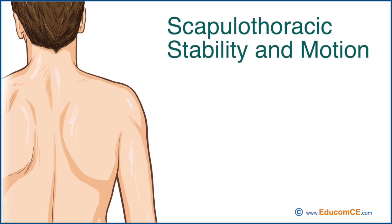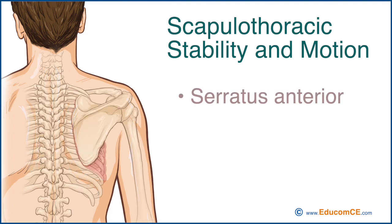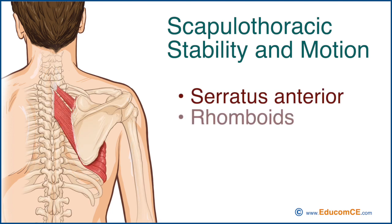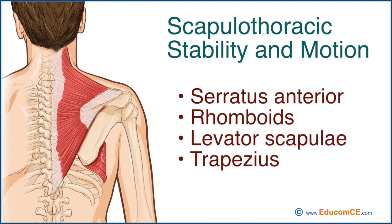The muscles primarily responsible for scapulothoracic stability in motion are serratus anterior, rhomboids, levator scapula, and trapezius.